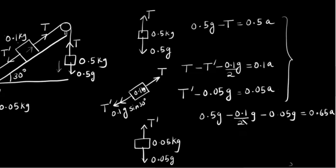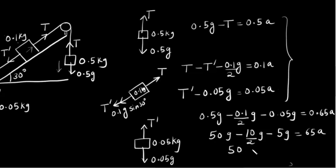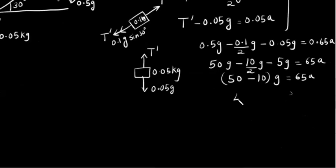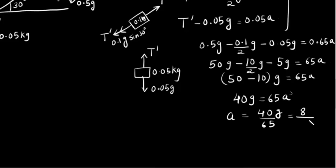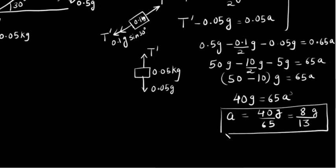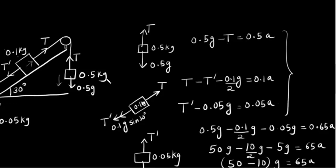Multiplying both sides by 100, we get 50g minus 10g divided by 2 minus 5g equals 65a. This becomes 50 minus 5 minus 5 g equals 65a, so 40g equals 65a. Therefore a equals 40g divided by 65, which simplifies to 8 by 13 times g. So the acceleration of the 0.5 kg mass is 8g/13.